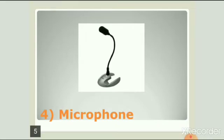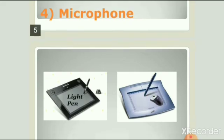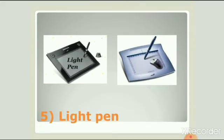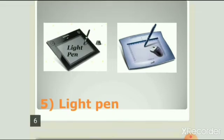Next input device is light pen. Light pen looks like a pen, but not a normal pen that we use for writing in our notebook — we can call it a digital pen. We can write with it on a special pad and whatever we write is seen on the computer screen. In this way, data is put into the computer. As you can see on the screen, using light pen, we can put data into the computer.